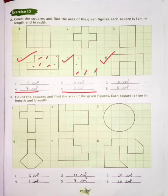Now number 6 — counting 1, 2, 3, 4, 5, 6, 7, and 8. So our answer is 8 square centimetres.